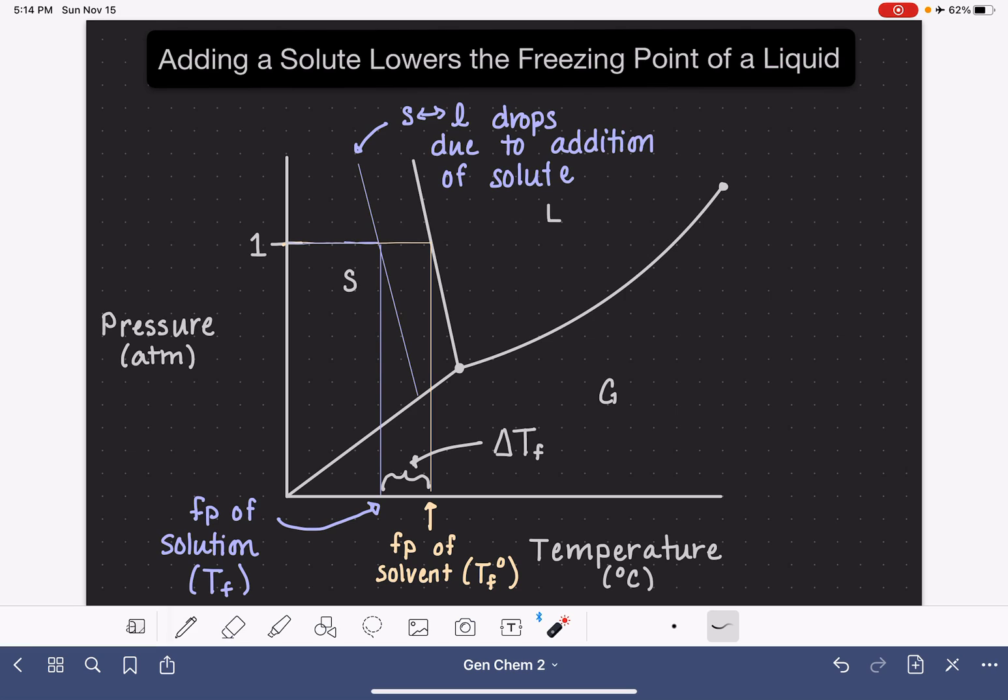And then last but not least, we have an equation very similar to the one that we saw in the last video. The temperature change, delta T_F, can be calculated by taking a constant, K_F, and multiplying it by the concentration of the solution in units of molality.